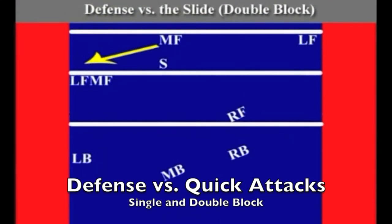The D-quick, or slide set as it is often called, is very difficult to stop. It is normally run when the setter is front row and the middle hitter comes from the middle of the court behind the setter all the way to the antenna. Normally you will see the left front and middle front blocker bunched in the middle of the court when the hitter starts the slide approach.